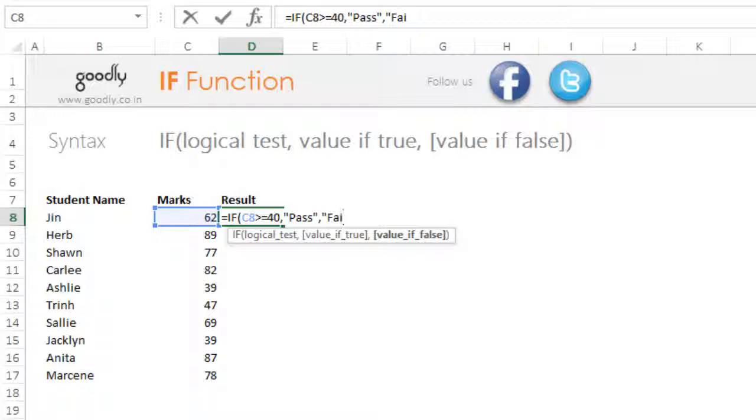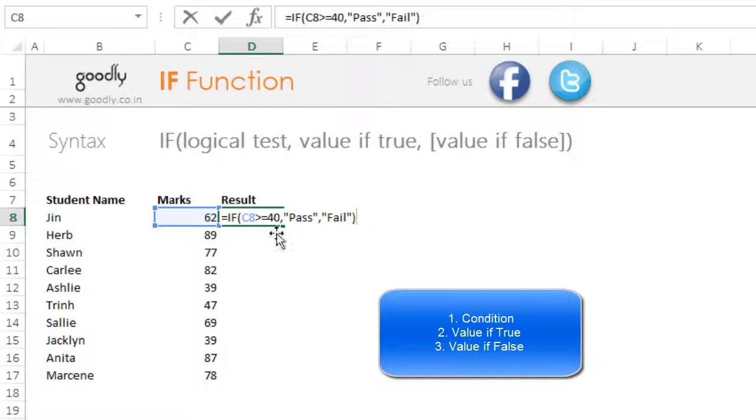Pretty simple. IF has got three parts. I'll just reiterate: the first thing that you write is the condition, whatever you're trying to test. The second thing is what if this condition stands true - this is what you write in the second part and you separate both of them by a comma. The final part is what if the condition is false and what action are you going to take. I'm going to say that he's failing. Put that as text, that's the reason why I've put that in inverted commas and I simply press enter.